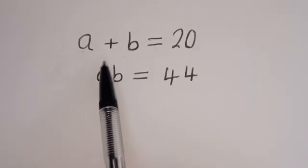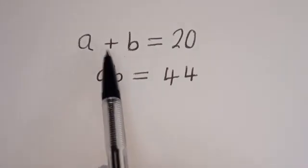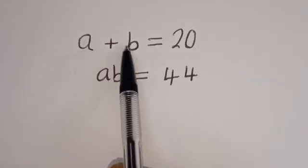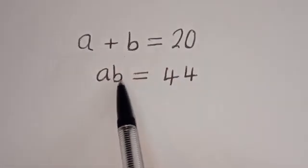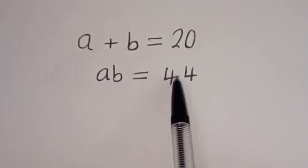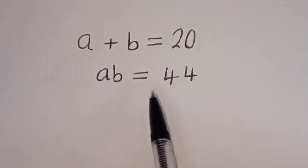Hello. How to solve for A and B in this equation? A plus B is equal to 20, and A times B is equal to 44.